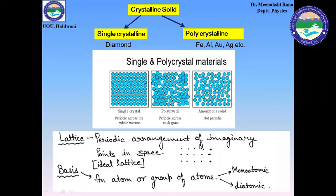There is also a concept of ideal lattice. An ideal lattice is any lattice having infinite length or no end points. Now, what is a basis? Basically, a basis is an atom or group of atoms. It may be monoatomic or may be diatomic.